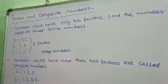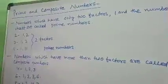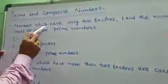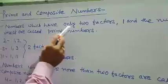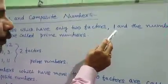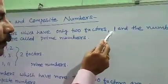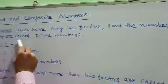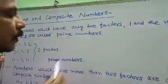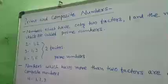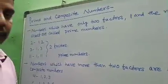Note it down properly. Numbers which have only two factors — one and the number itself — are called prime numbers. Those numbers which are having only two factors are called prime numbers.